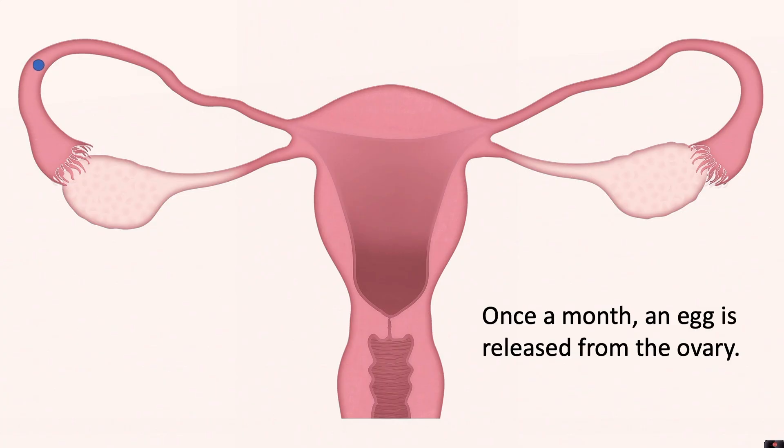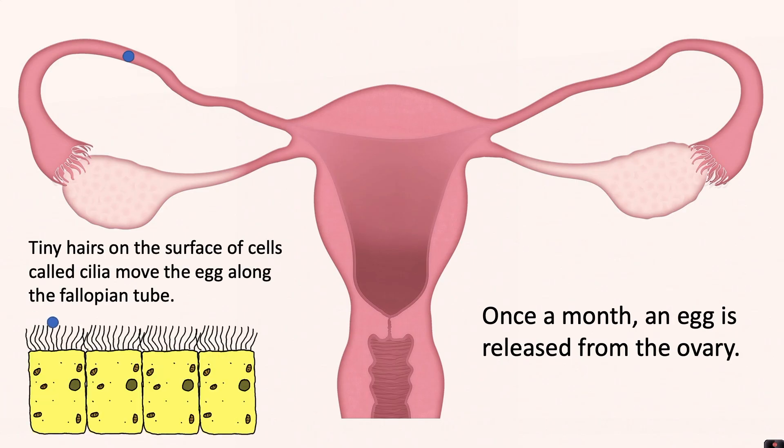Once a month an egg is released from either of the ovaries. Tiny hairs on the surface of cells called cilia move the egg along the fallopian tube.